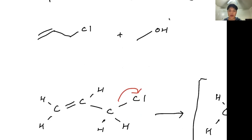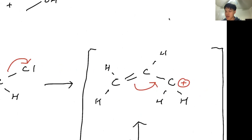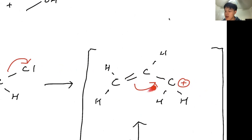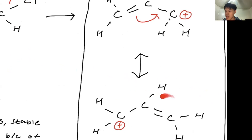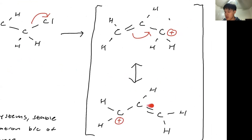So why can this leaving group leave? Well, this leaving group can leave because there's resonance here with this double bond. It has extra electrons and it can donate to this carbon, which has a loss of electrons. And if it donates its electrons there, you see this double bond is now formed here along carbon 2 with carbon 3.